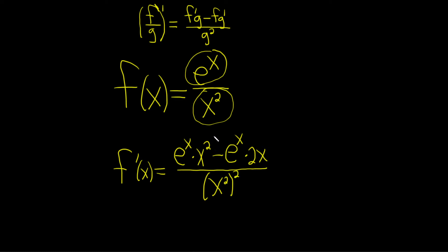Let's go ahead and check our work. So it's the derivative of the top, which is just e to the x times the bottom minus the top function, which is e to the x, times the derivative of the bottom, which is simply 2x by the power rule.